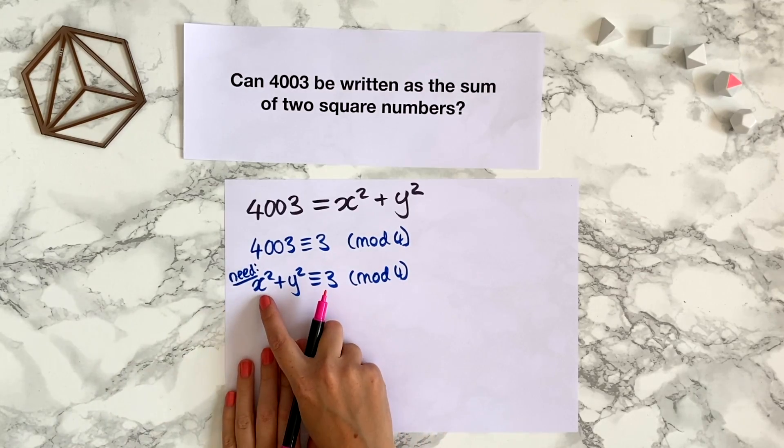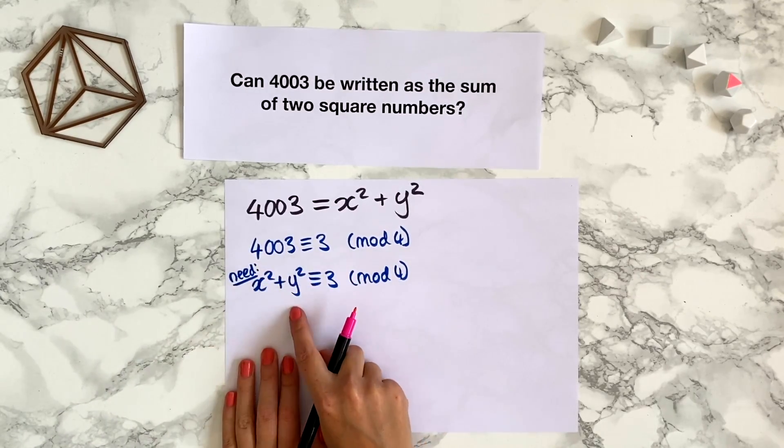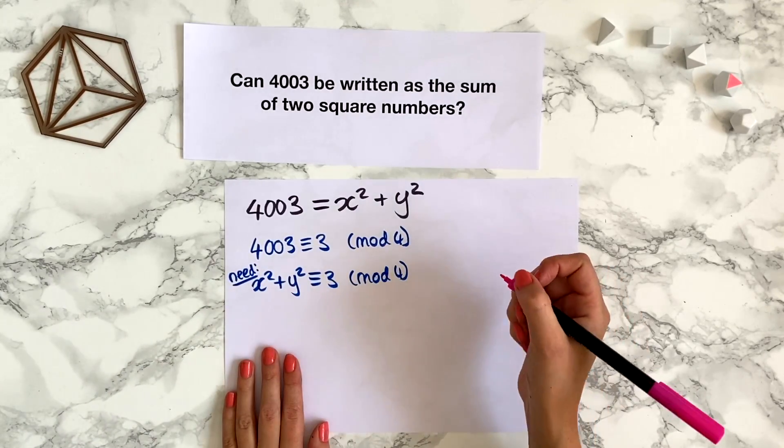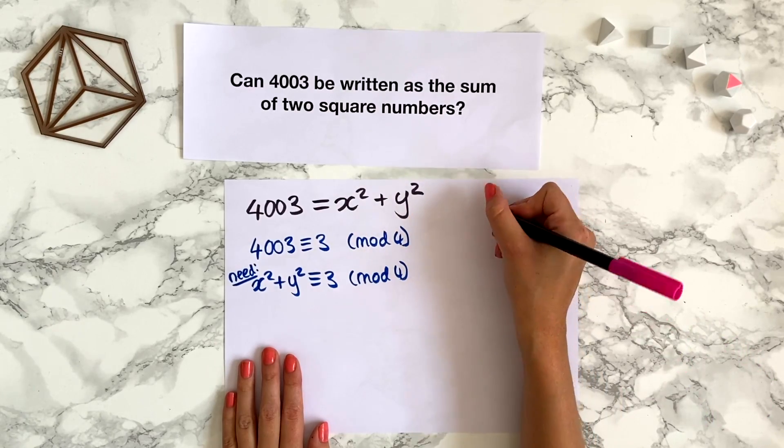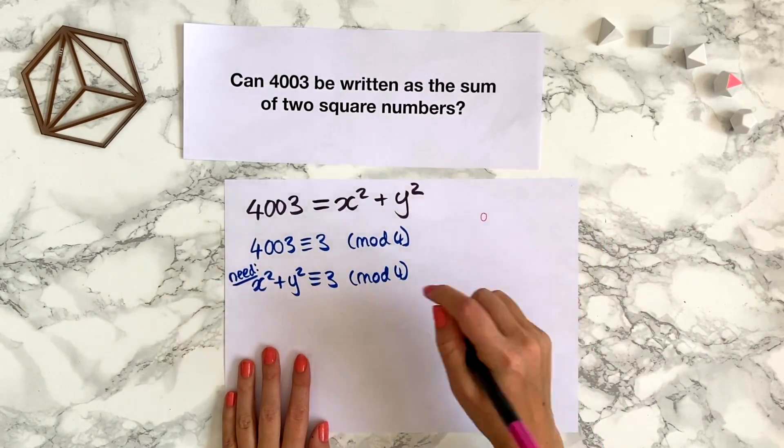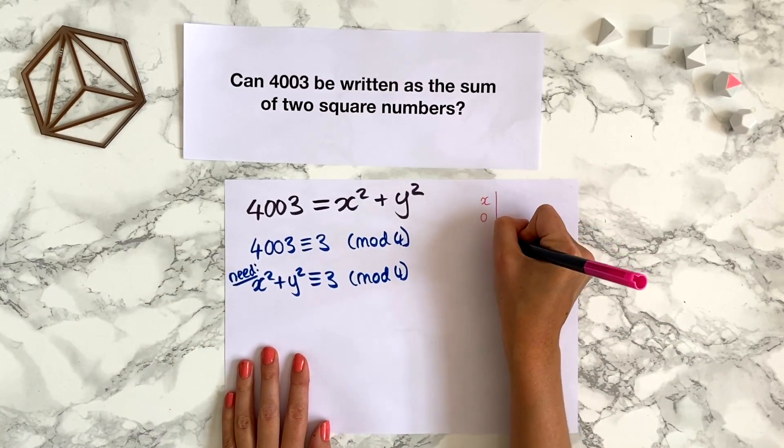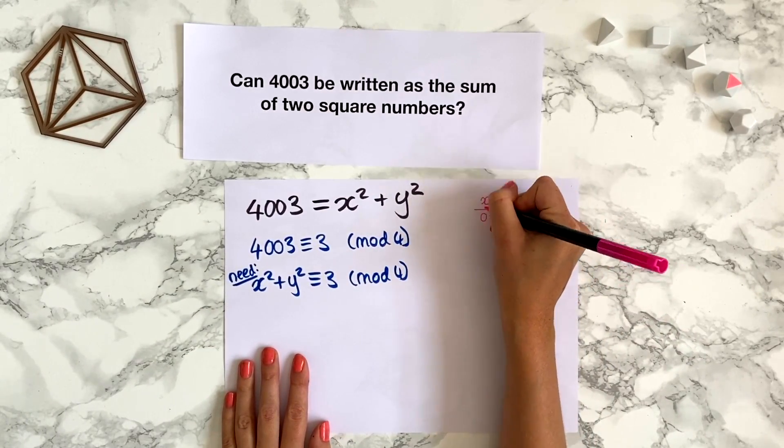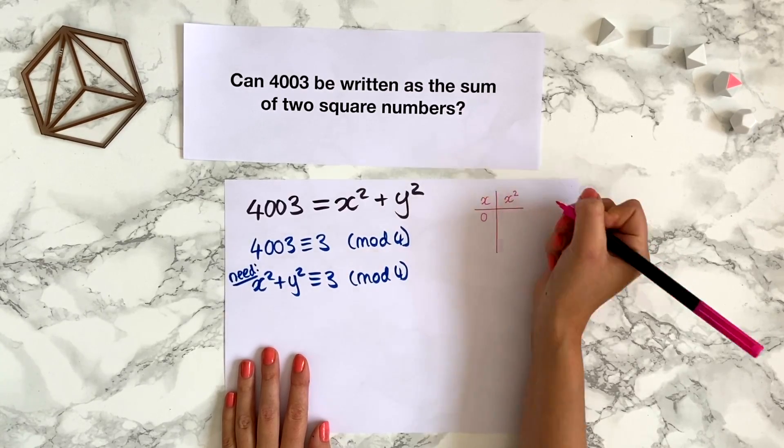Now let's see what that means for what x squared and y squared are. So in modulo 4, say x or y is 0. So let's just focus on x values. So let's say x, we're going to make a table here. We're going to have x in this column and x squared in this column.